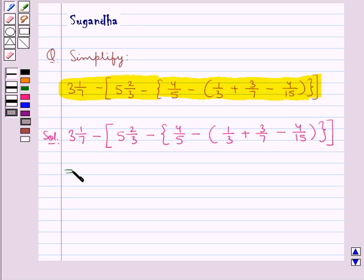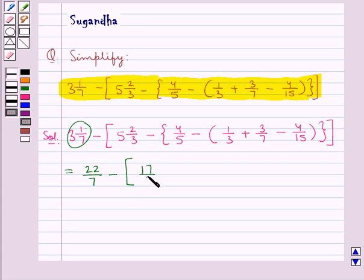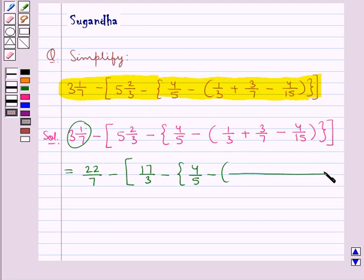This is further equal to: we can write 3 and 1 upon 7 as 22 upon 7 minus square bracket open. Now 5 and 2 upon 3 can be written as 17 upon 3 minus curly bracket open 4 upon 5 minus round bracket open. We will simplify the terms in the round bracket first, since this is the innermost bracket. We take the LCM of the denominators of the fractions inside the round bracket. We get the LCM as 105.